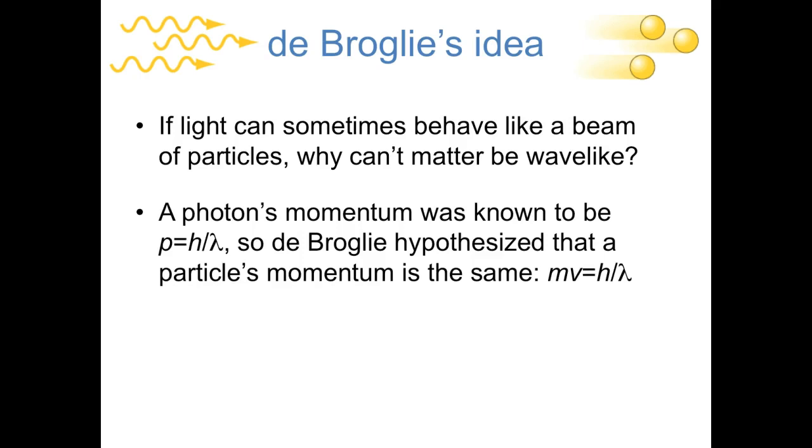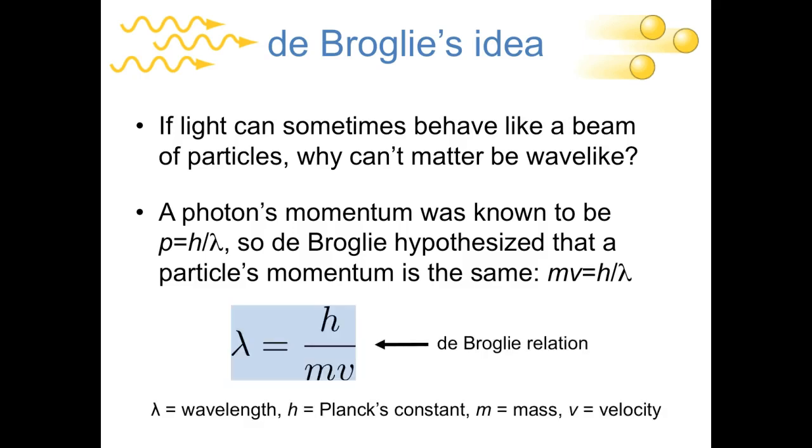To quantify this, de Broglie used an idea that was known from wave mechanics at the time, the fact that a photon's momentum, p, is equal to Planck's constant over the wavelength, to say that, well, what if the momentum of an object, mv, the mass times the velocity, which was known from Newtonian mechanics, is equal to the same thing, Planck's constant over the wavelength? And a small rearrangement of this equation gives us what's now called the de Broglie relation: lambda, the wavelength, is equal to Planck's constant h over classical momentum, mass times velocity.